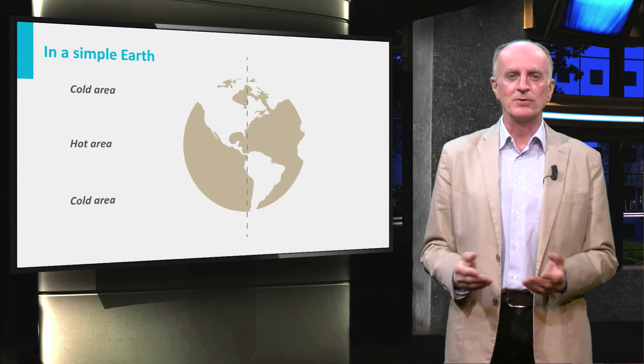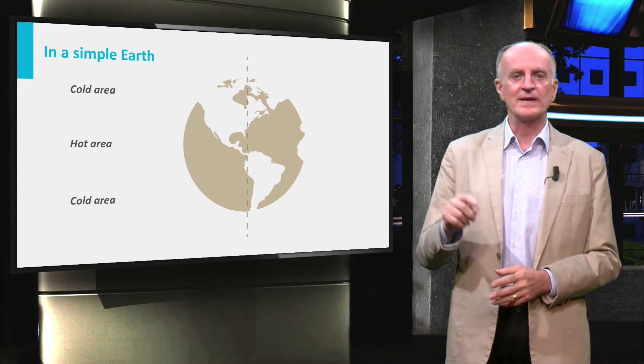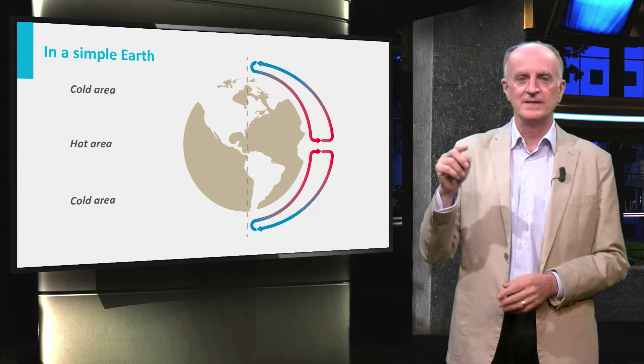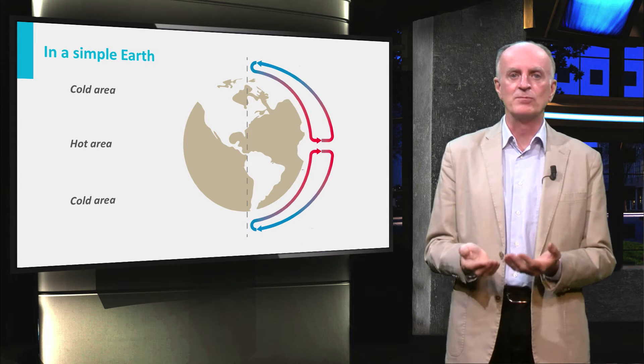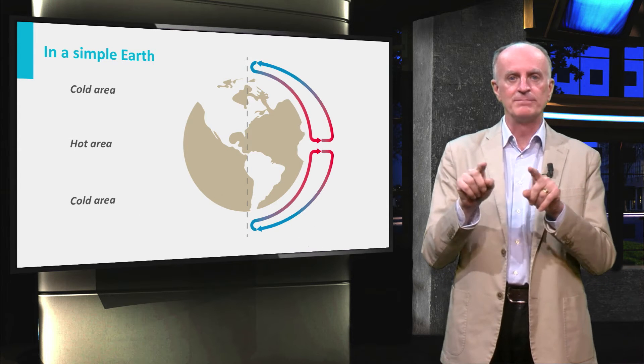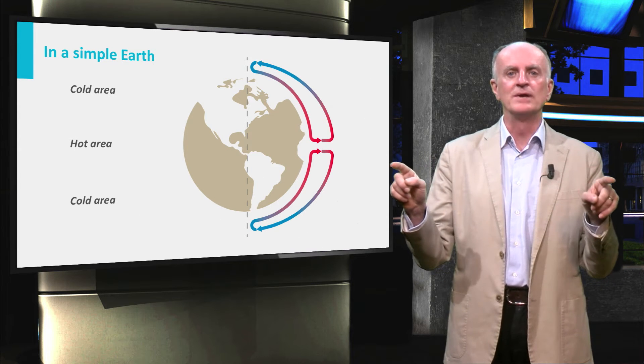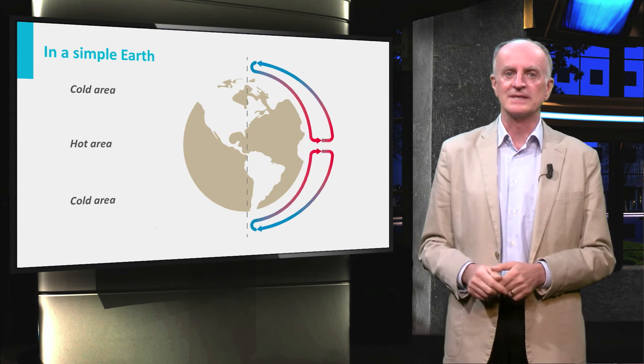In a fixed and simple Earth, air will circulate along two large cells. It will rise in correspondence of the equator, moving then towards the poles where it will become cooler, heavier, and will descend, forming a first order cell.